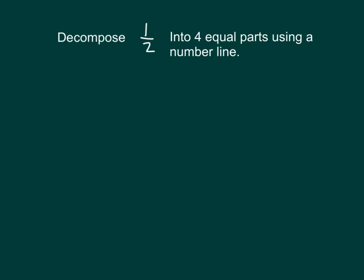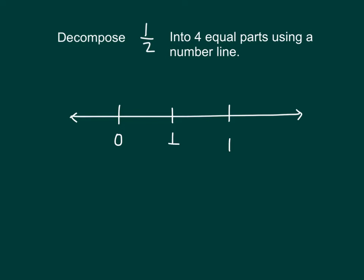Here we're asked to decompose 1 half into 4 equal parts using a number line. It's a new type of problem. We'll draw our number line first and then record those whole numbers: 0 and 1, because we know 1 half is in between 0 and 1. In fact, it's halfway in between, so we'll go ahead and mark 1 half there. Next, it's saying to decompose that 1 half into 4 equal parts, so to get 4 equal parts between 0 and 1 half, I'll have to draw 3 lines.